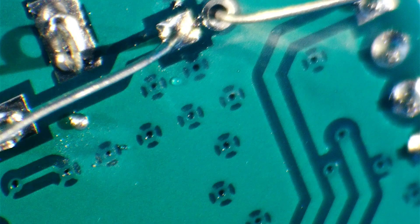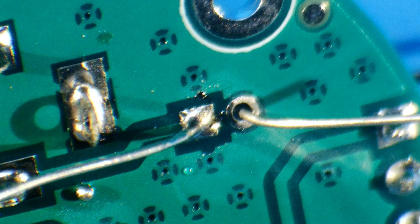The through-hole parts are pretty self-explanatory. The only thing to watch out for is that the electrolytic capacitor polarity is correct.